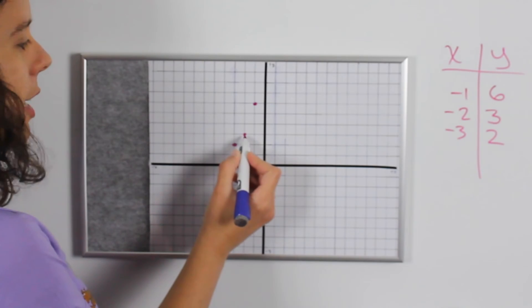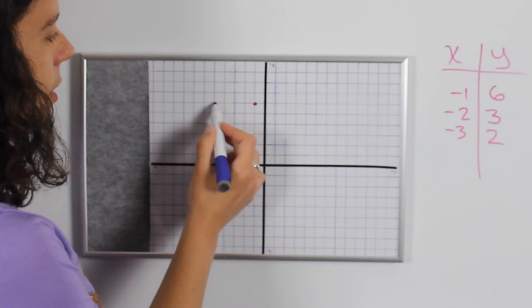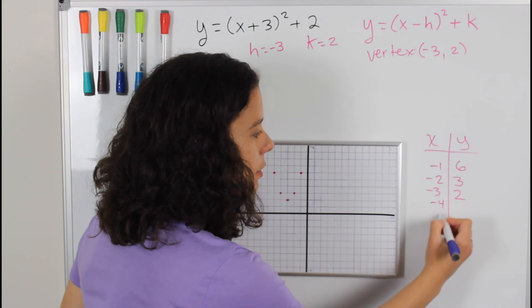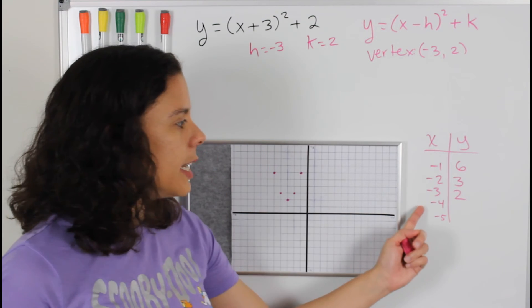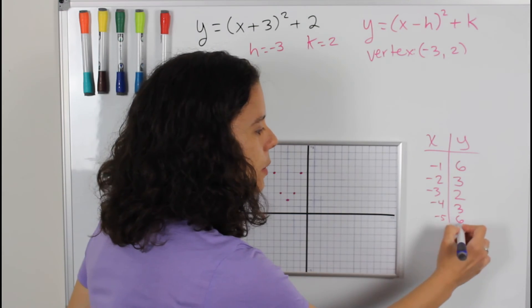So if this point is right here, there is going to be a point right here. And if this point is right here, there's going to be a point right here. So when I go back to negative four and negative five, negative four is going to be three and negative five is going to be six.